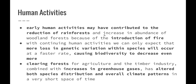Clearing forests for agriculture and the timber industry over the last few centuries, combined with increases in greenhouse gases from the burning of fossil fuels, has altered both species distribution and overall climate patterns in a very short space of time.